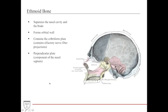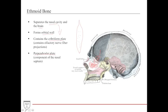The ethmoid bone is one of the most interesting bones in the skull because it has very different but purposeful functions. First, it separates the nasal cavity from the brain. Second, it forms a significant portion of the orbital wall. This nasal-brain separation occurs via the cribriform plate — looking down at the anterior cranial fossa from a bird's-eye view, you can see all these little holes through which the olfactory nerve projects its fibers. The ethmoid also has a perpendicular plate, which forms one of the significant portions of the bony nasal septum, along with the vomer.